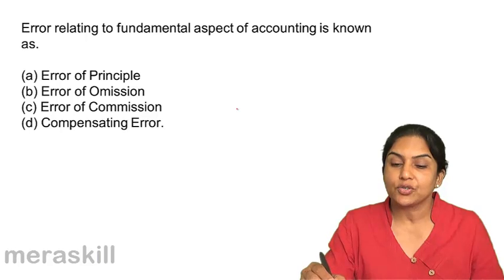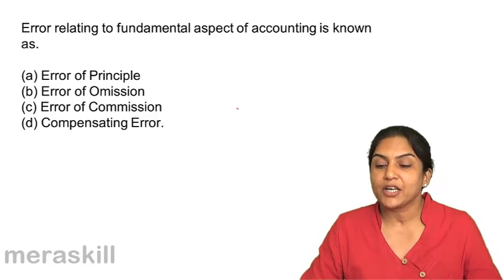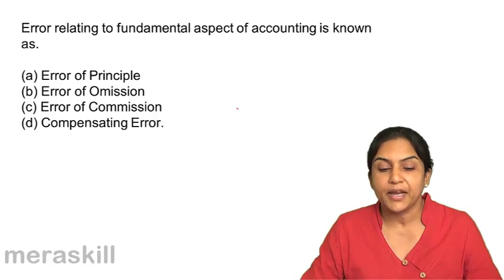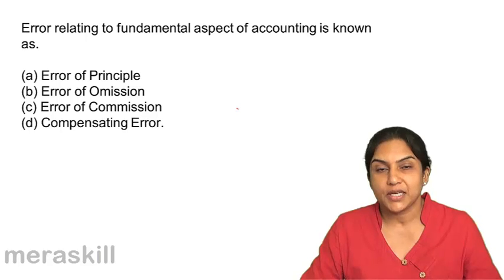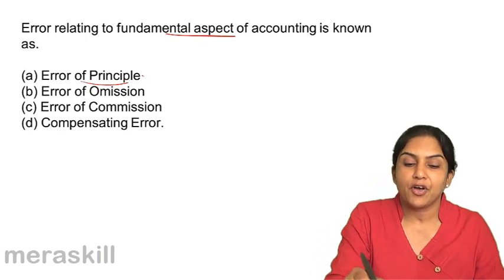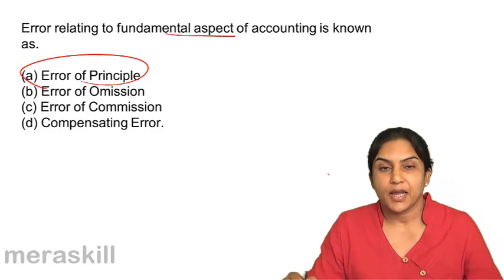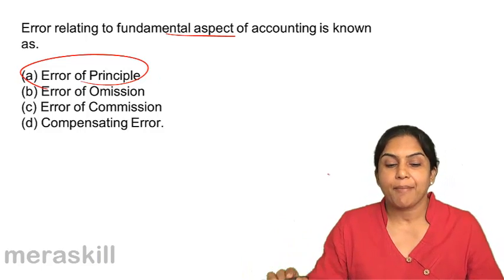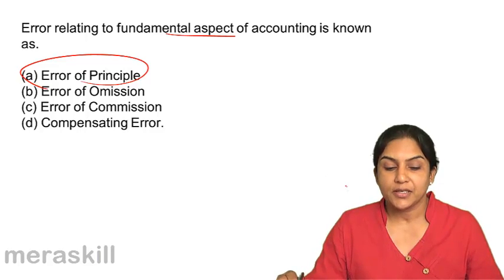Errors relating to the fundamental aspect of accounting are known as: A, error of principle; B, error of commission; C, error of omission; or D, compensating errors. Errors of principle include treating capital expenditure as revenue and vice versa. Correct answer A, error of principle.